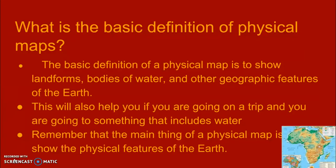What is the basic definition of a physical map? The basic definition of a physical map is to show landforms, bodies of water, and other geographic features of the Earth. This will also help you if you're going on a trip and you're going somewhere that includes water. The main thing of a physical map is to show the physical features of the Earth.